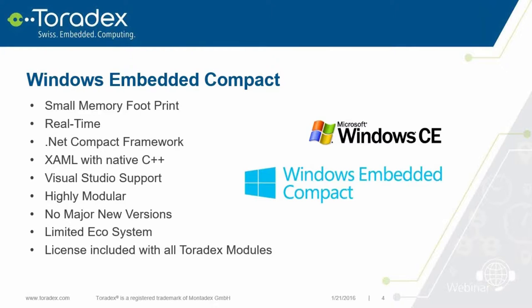Windows CE supports the .NET Compact Framework. There are roughly three or four kinds of .NET frameworks: the .NET Micro Framework, which can run on a microcontroller without an MMU; the .NET Compact Framework, which is a subset of the big framework; and then of course the big .NET Core, which we'll talk about later. Windows CE also supports XAML for the user interface — the kind you know from Metro apps or Windows Store apps — but in contrast with desktop, it uses native C++.